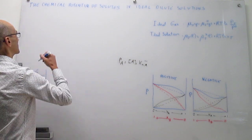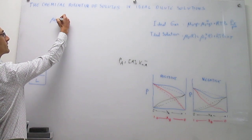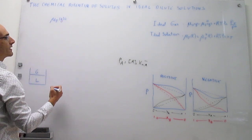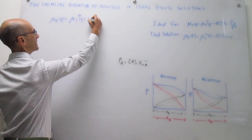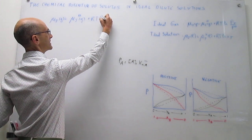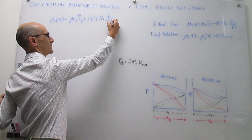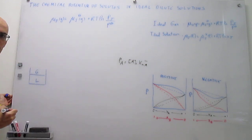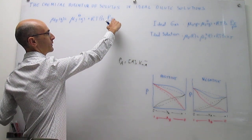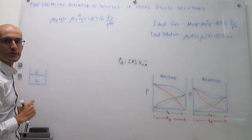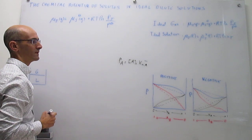Let me take this expression for an ideal gas. The chemical potential of component J in an ideal gas mixture is simply the chemical potential of that component at the standard state plus a correction which is RT times the natural log of the vapor pressure of that component J divided by the standard pressure of one bar. The idea then is that we can use Henry's law to replace this partial pressure by something that depends on the concentration of the solute in the solution.